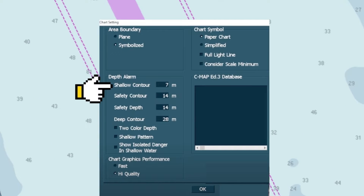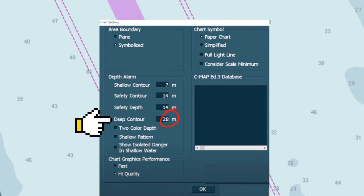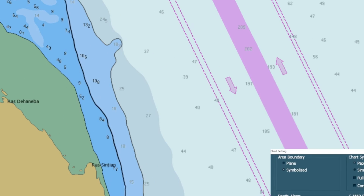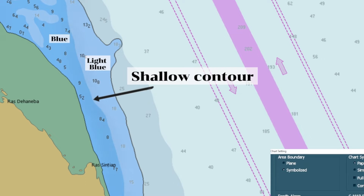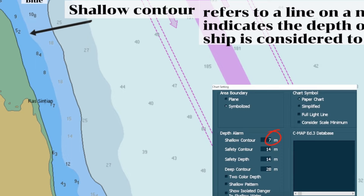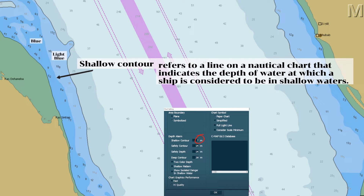In this ENC, the value set for the shallow contour is 7 meters, for the safety contour and safety depth it is set to 14 meters, and 28 meters for the deep contour. The contour line between the blue and the light blue is a shallow contour. Shallow contour refers to a line on a nautical chart that indicates the depth at which a ship is considered to be in shallow waters. Ships will never enter beyond the shallow contour into the blue area because there is a high risk of running aground. Since the set value is 7 meters and there are no intermediate contours available, it will always display the available contour higher than the set value — the next available contour higher than 7 meters is 10 meters.